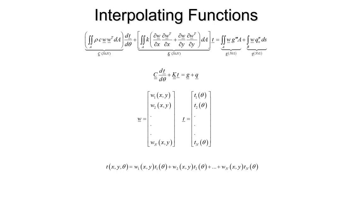The same thing applies to the K matrix — again an area integral involving all of our interpolating functions — and on the other side we have the G and Q vectors. This is what W and T look like in general, and our temperature, which is a function of X, Y, and time, is just W transpose times T. So it's W1 times T1, W2 times T2, and so on.